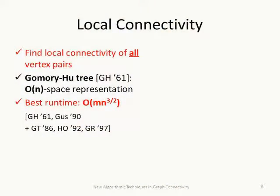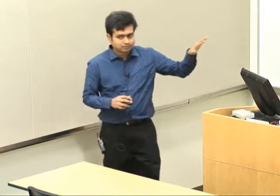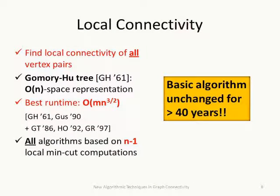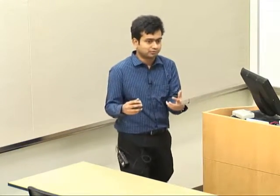Many algorithms have been proposed to construct a Gomory-Hu tree. The best running time is m times n to the three-halves. Surprisingly, all algorithms over the last 40-50 years follow exactly the same recipe: identify a linear number of critical min-cuts, then use a local min-cut algorithm to find them and assemble the Gomory-Hu tree. The differences lie only in how cuts are identified and found.